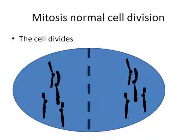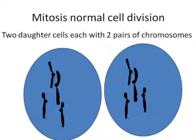To complete the animation, the cell then divides, splits down the middle, and you end up with two daughter cells. They each have two pairs of chromosomes, so they are identical to their parent cell. That's very important.